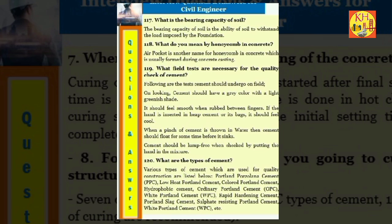Question 118: What is the bearing capacity of soil? The bearing capacity of soil is the ability of soil to withstand the load imposed by the foundation. Question 119: What do you mean by honeycomb in concrete? Air pocket is another name for honeycomb in concrete which is usually formed during concrete casting. Question 120: What field tests are necessary for the quality check of cement? Following are the tests cement should undergo on field: On looking, cement should have a gray color with a light greenish shade. It should feel smooth when rubbed between fingers. If the hand is inserted in heap cement or its bags, it should feel cool. When a pinch of cement is thrown in water then cement should float for some time before it sinks. Cement should be lump free when checked by putting the hand in the mixture.